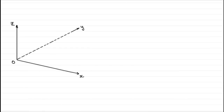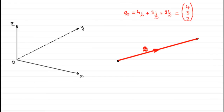Now suppose we had two points in space, and let's suppose we had a vector that went from this point to this point. We'll call that vector a. Let's say that vector a was 4i plus 3j plus 2k, where i, j and k are unit vectors in the x, y and z directions respectively. Or we could write it as a column vector 4, 3, 2.